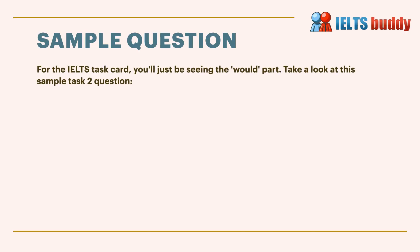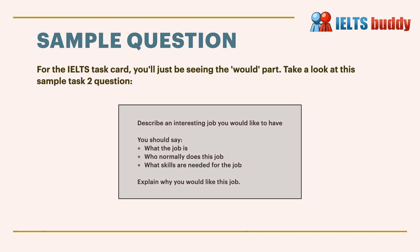For the IELTS task two card, you'll just be seeing the card. Take a look at this sample task two question: 'Describe an interesting job you would like to have.' You should say what the job is, who normally does this job, what skills are needed for the job, and explain why you would like this job.